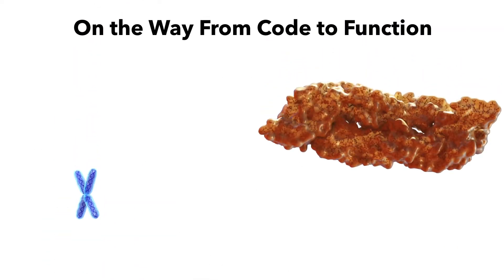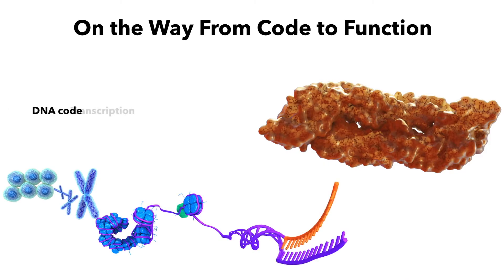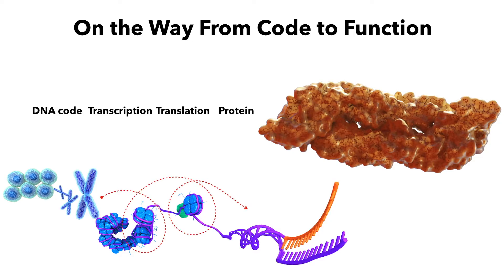Before we go into the specifics of epigenetic variation or regulation, let's discuss the structure of DNA and how it is organized in eukaryotic cells. As you remember, the foundational understanding about phenotypes is that DNA codes for genes, those genes are transcribed into RNA, which are then translated into proteins. However, these processes appear to be regulated by a variety of mechanisms that are not directly recorded in the actual code of DNA.